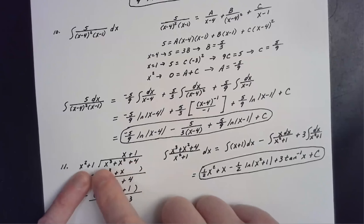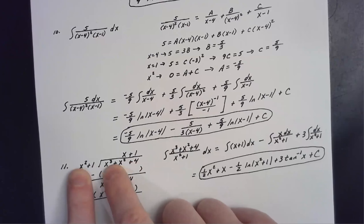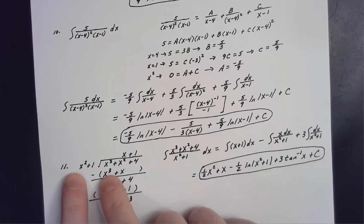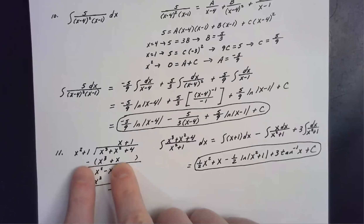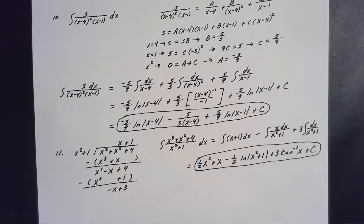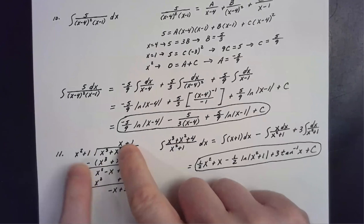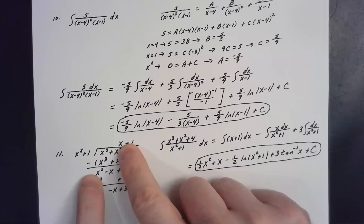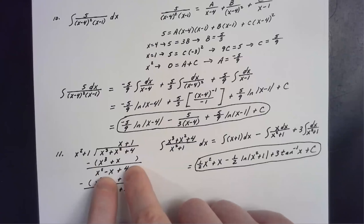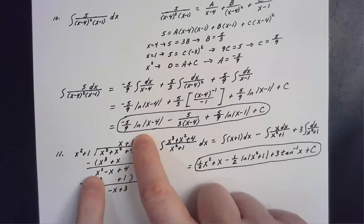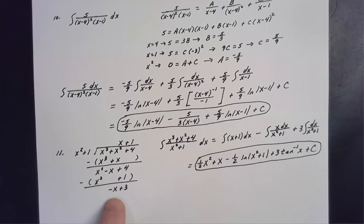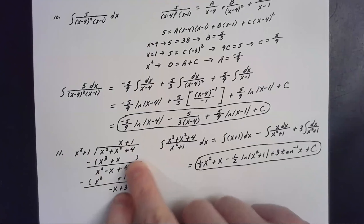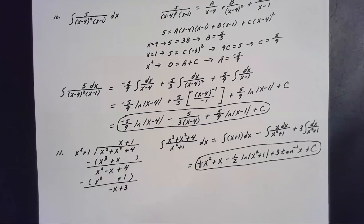So the first step is to divide the denominator into the numerator. x squared goes into x cubed, x times. Then x times x squared is x cubed, and x times one gives x. Subtracting out, the x cubed terms cancel, leaving x squared. Bringing down minus x plus four: x squared goes into x squared once. One times x squared is x squared, one times one is one. Subtracting x squared plus one leaves negative x plus three as the remainder.